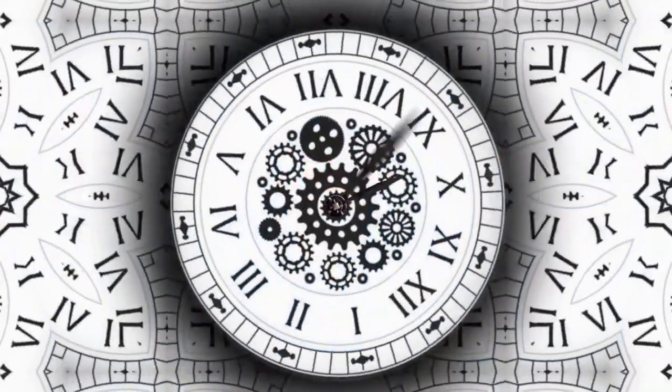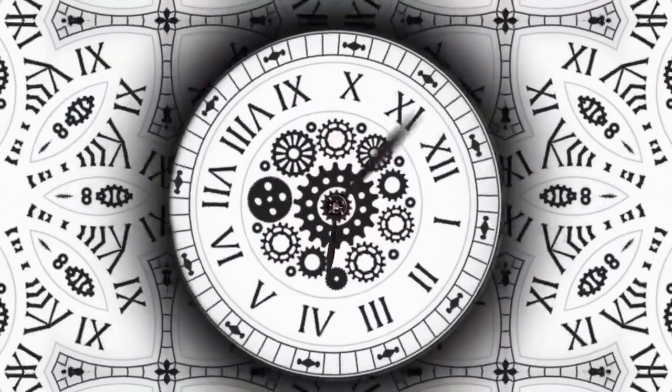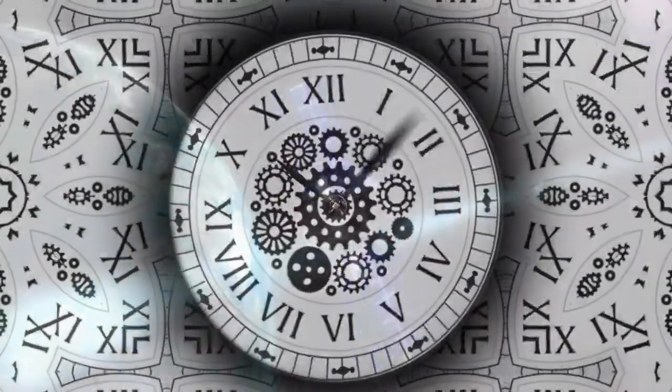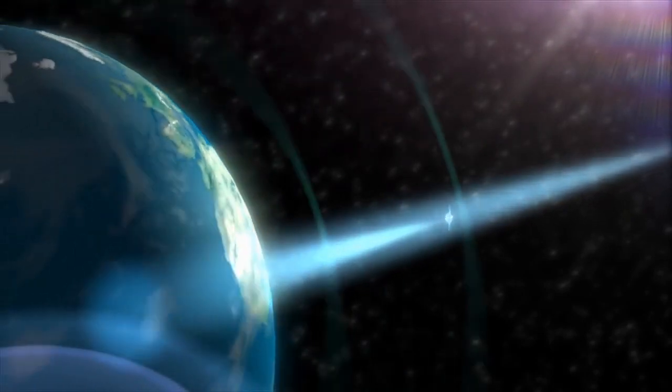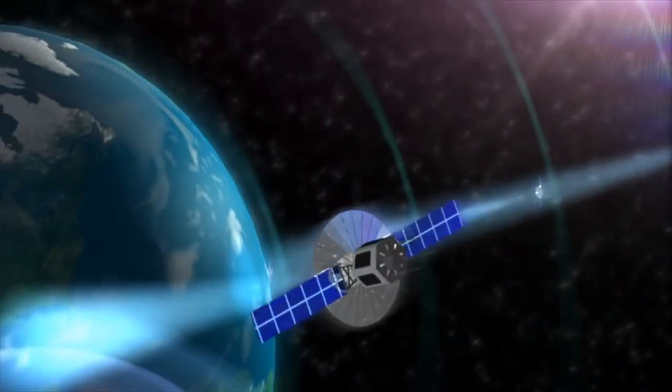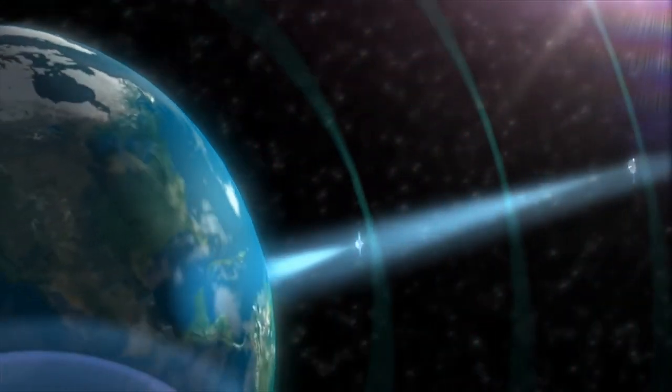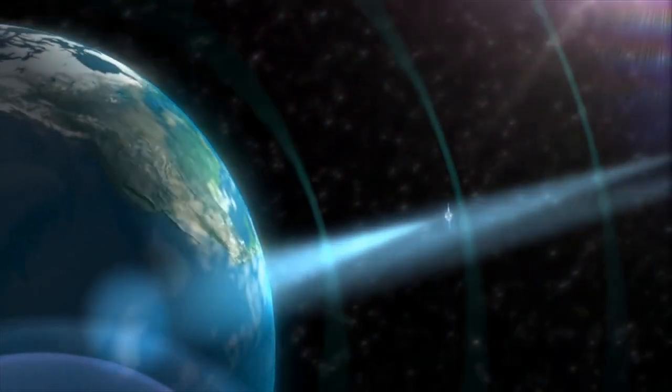Of course, all this only works if the receiver and the satellites keep perfect time. For the satellites, that's easy. Each one carries multiple atomic clocks. Atomic clocks use the atomic oscillations of atoms to maintain time accurate to within less than a second over millions of years.